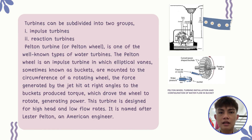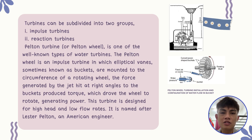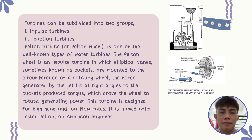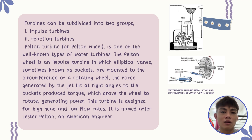The turbine can be subdivided into two groups. Group one is the impulse turbine and group two is the reaction turbine. The Pelton turbine, or Pelton Wheel, is one of the well-known water turbines. The Pelton Wheel is an impulse turbine which has buckets mounted on the circumference of a rotating wheel. As seen in figure one, the force generated by the jet hitting the bucket produces the torque which causes the wheel to rotate.